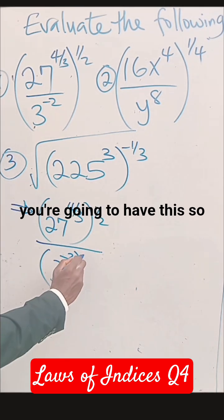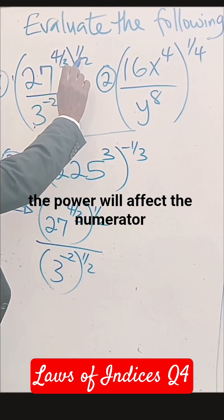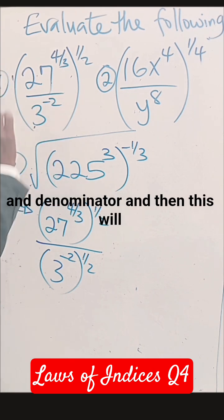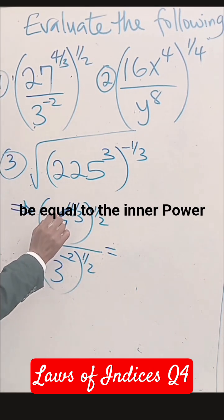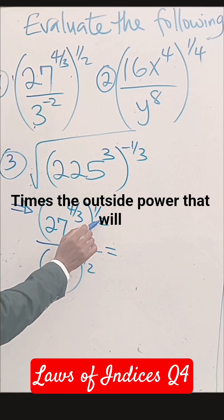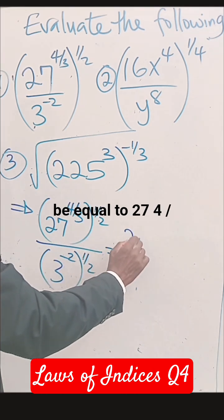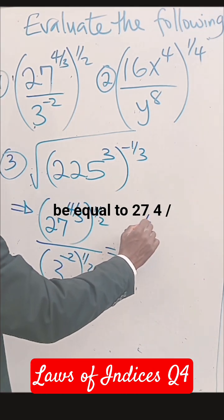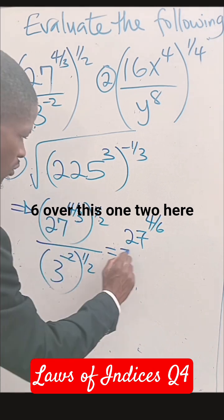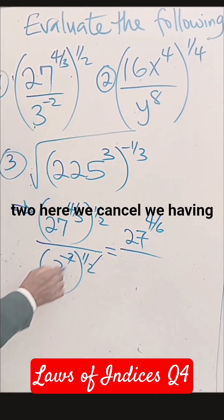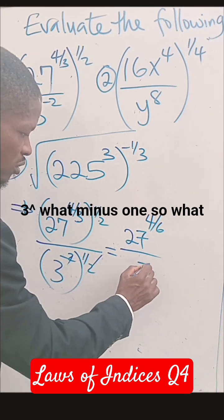So the power will affect the numerator and denominator, and then this will be equal to the inner power times the outside power. That will be equal to 27 to the 4 over 6, over this one. 2 here, 2 here we cancel, we're having 3 to power minus 1.